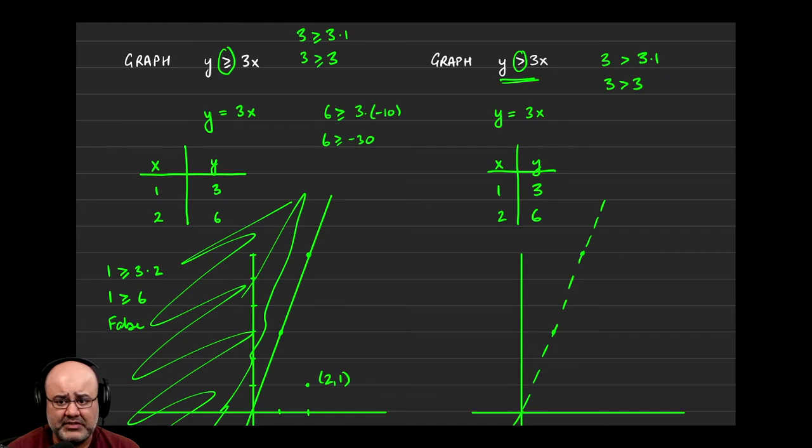Whereas if we had done the same thing for the left-hand inequality, 3 is greater than or equal to 3 times 1, 3 is greater than or equal to 3, that's actually a true statement, because we're saying greater than or equal to. So if it's just strict inequality, greater than or less than, we do not include the line in the solution. If it is greater than or equal to or less than or equal to, we do include the line by making it solid, not dashed.